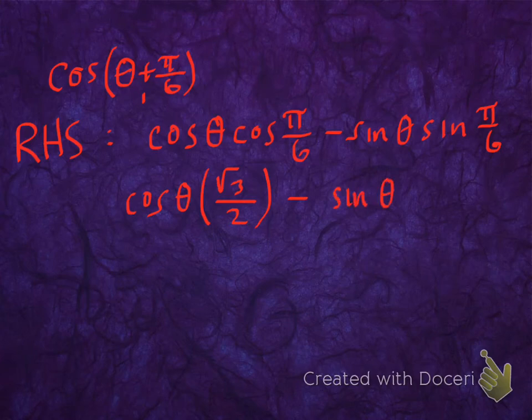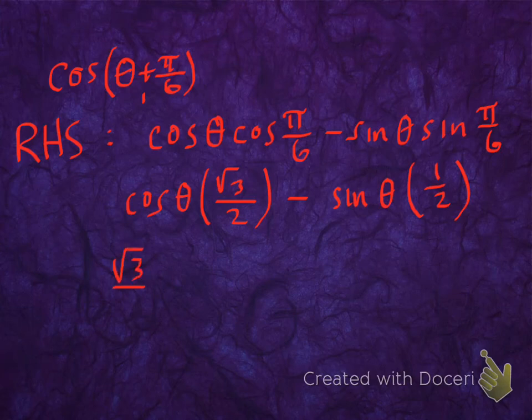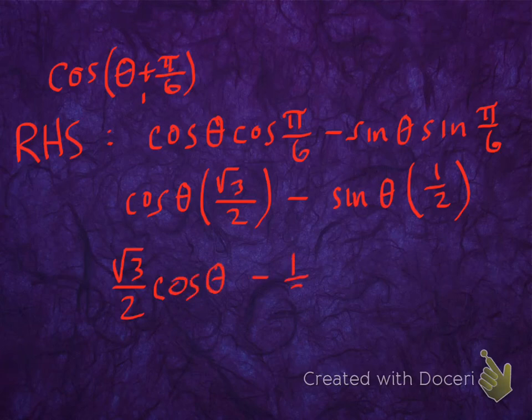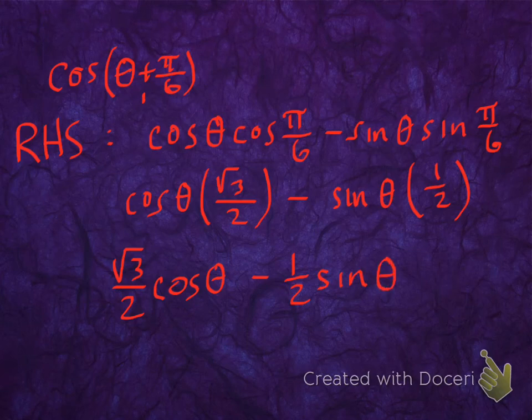which is times sine of pi over 6, which is 1 half. Rewriting in conventional form: root 3 over 2 cosine theta minus 1 half sine theta. This is looking familiar.